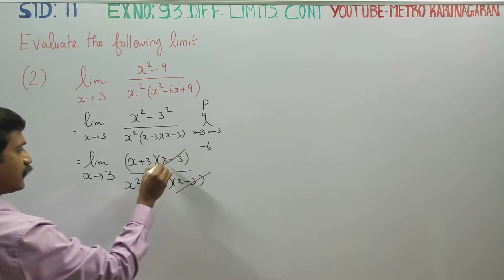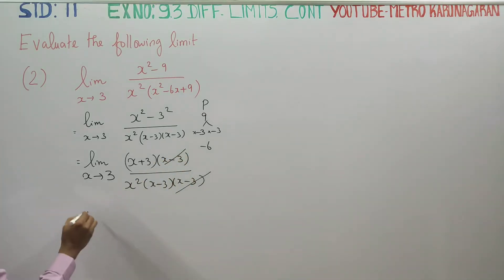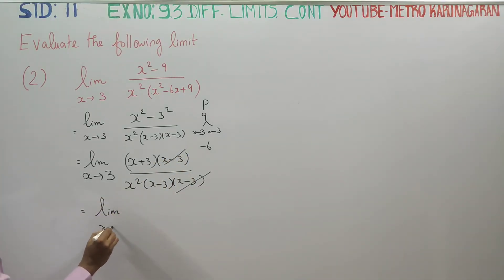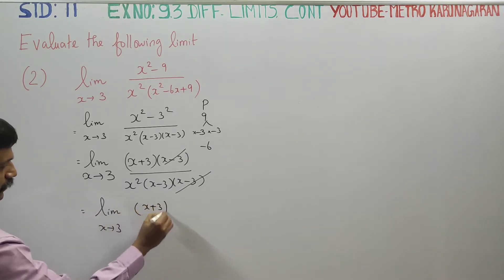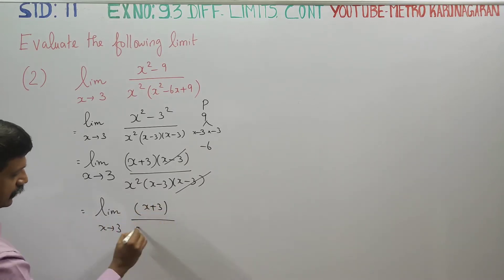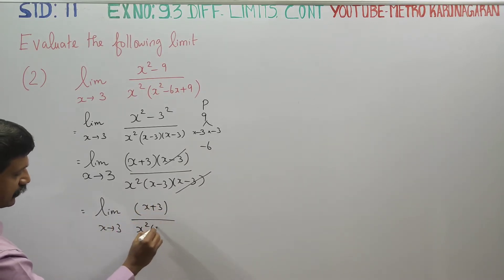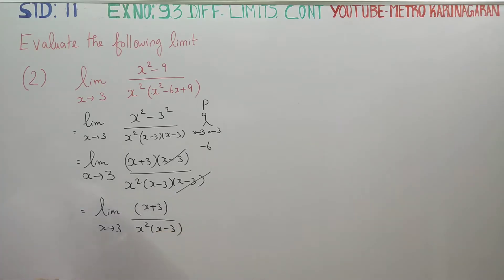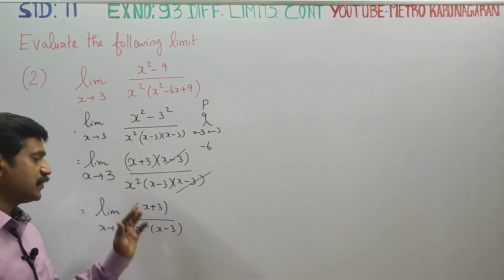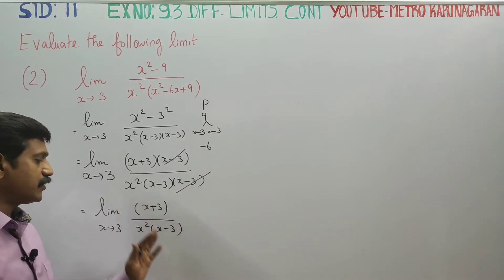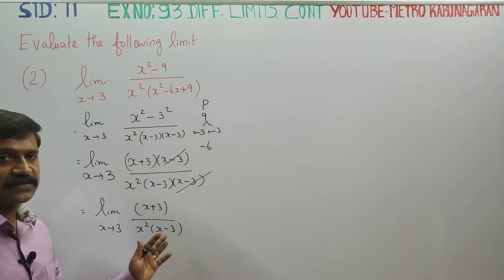This simplifies to limit x turns to 3 of x plus 3 divided by x squared into x minus 3. When we put x equal to 3, x minus 3 becomes 0, so the denominator becomes 0, which means the result goes to infinity.